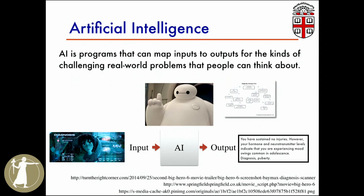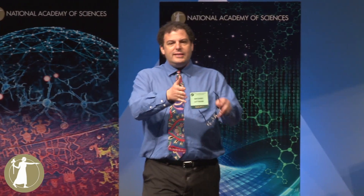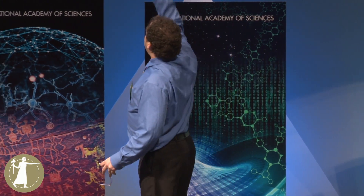Baymax can take in information about the person standing in front of him — measure vital signs and so forth — and then there's some function that maps all that information to a diagnosis like, you know, 'you've sustained no injuries, but your hormone levels are really high — the diagnosis is puberty.' The AI program inside is like a decision tree or diagnosis chart that it's following.